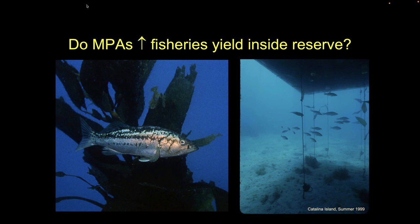Another key aspect of MPA network theory: do they help us get fish outside of our protected area? If our goal is fisheries management, can we augment fishery populations outside? This is some of my PhD work. This is a kelp bass — the most common fish landed recreationally in southern California.